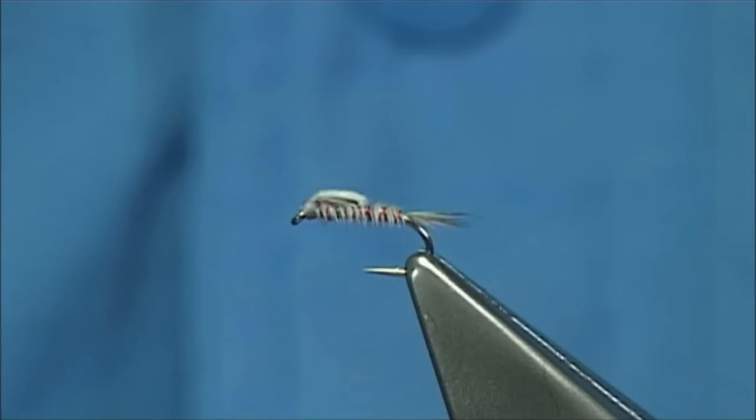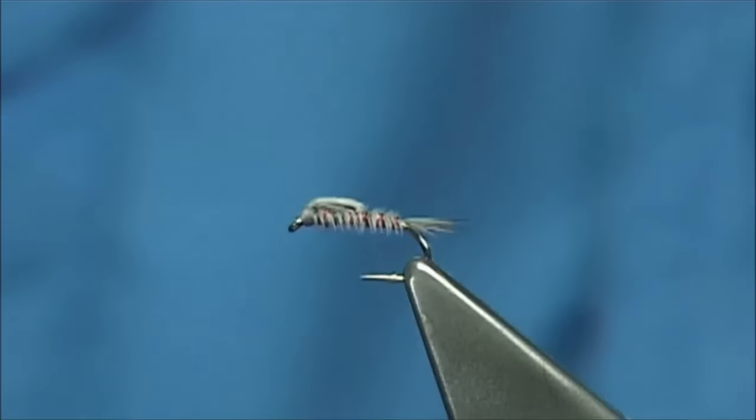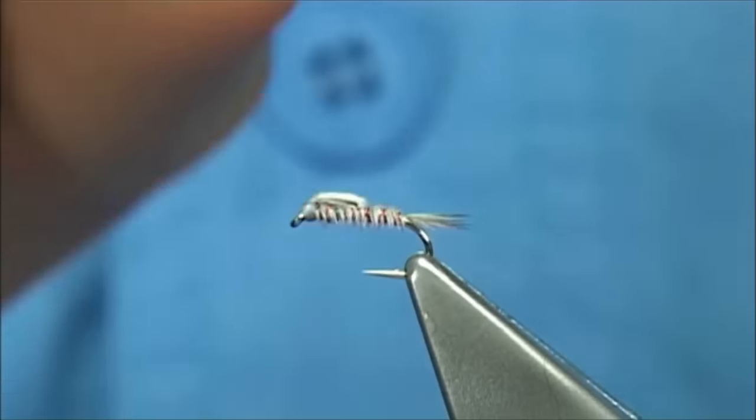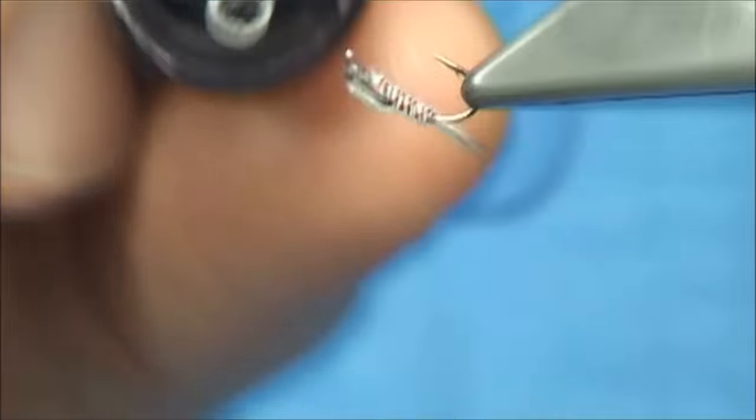Just cast it upstream and let it drift naturally. And you'll find you'll pick up the fish. Then as I said, we have to varnish the head. Very easy.